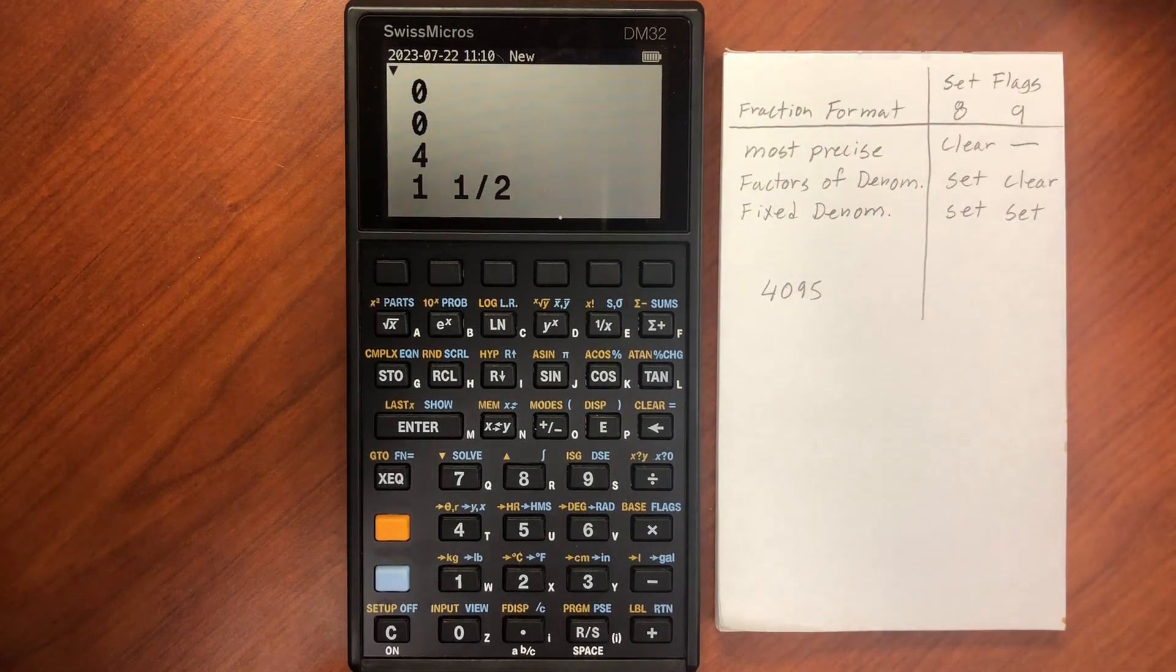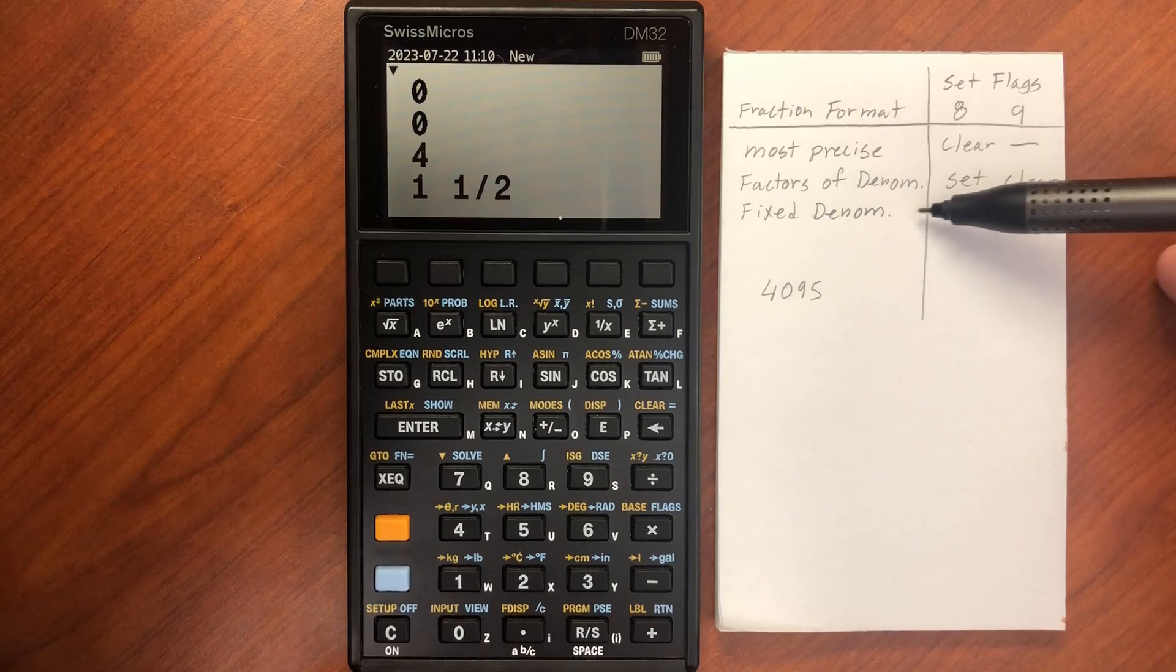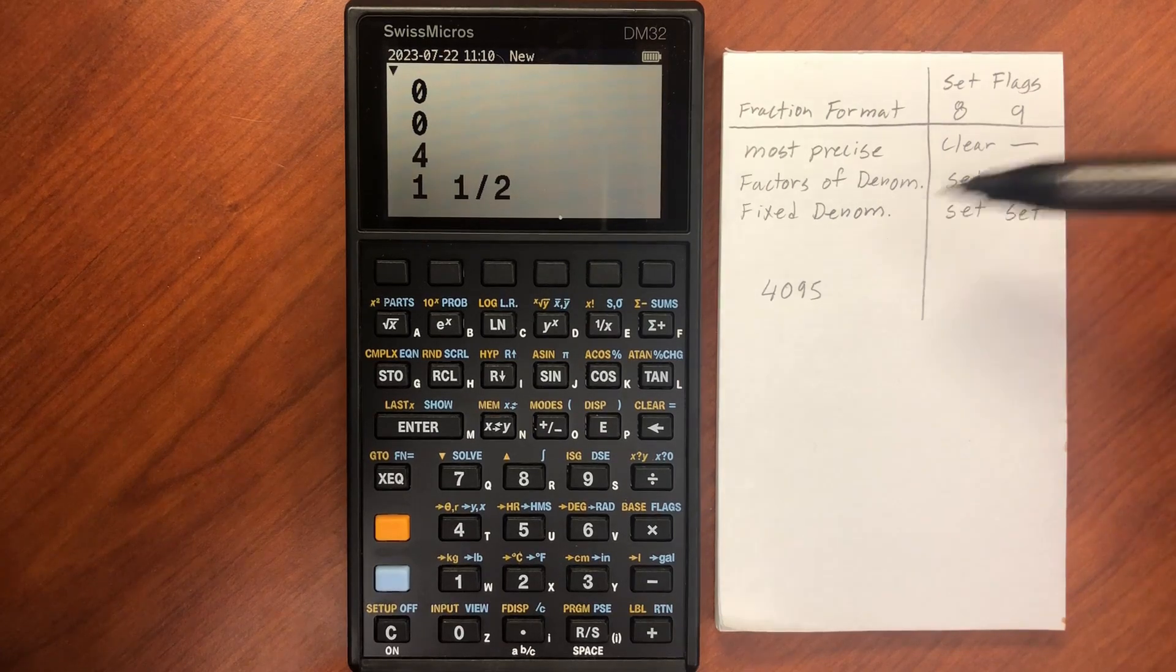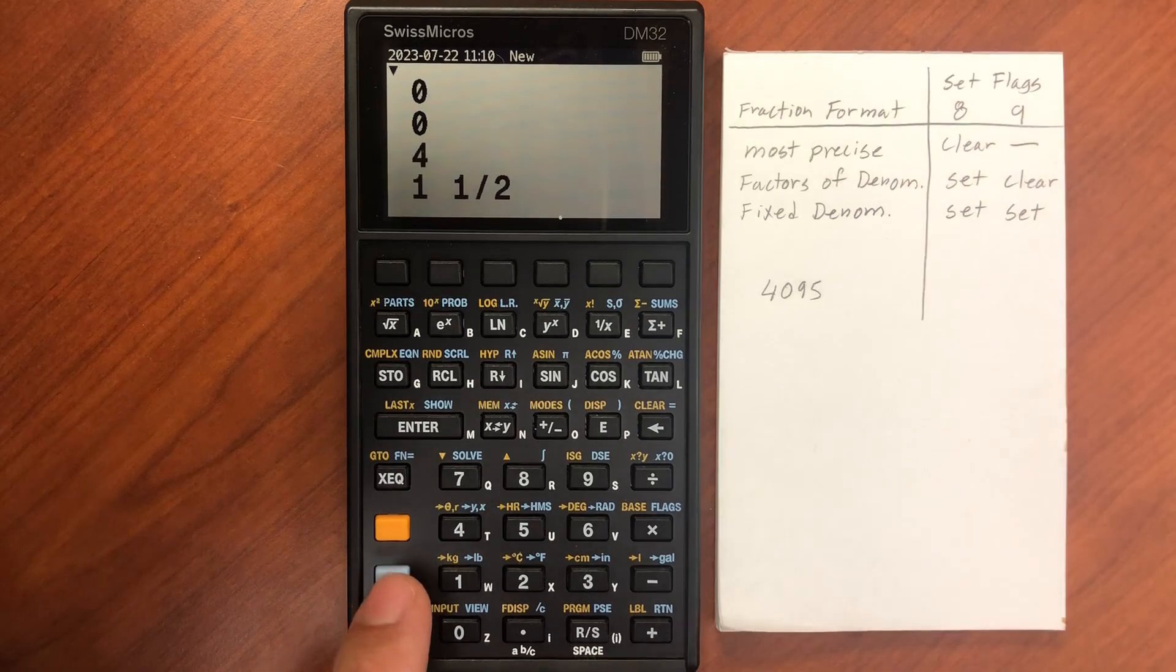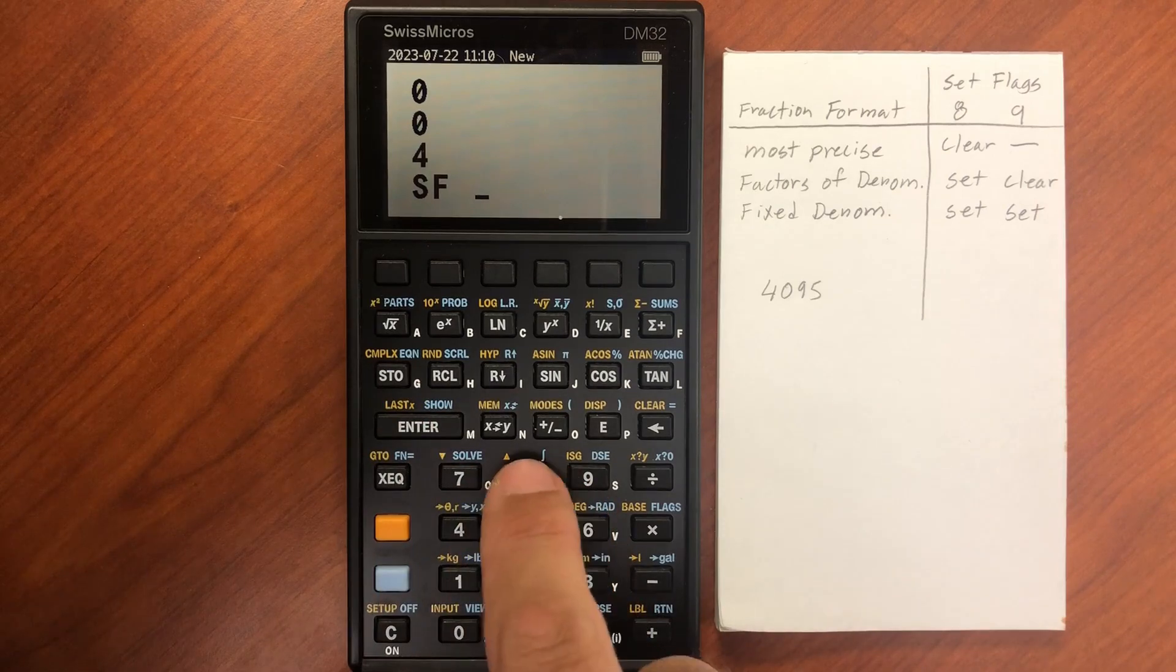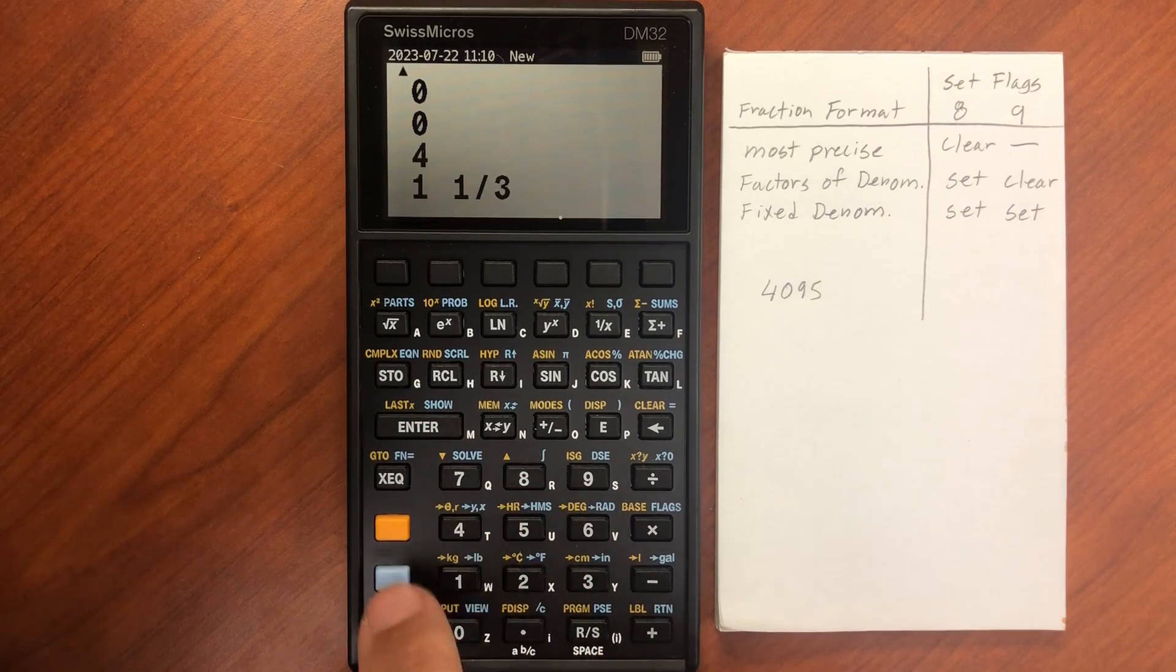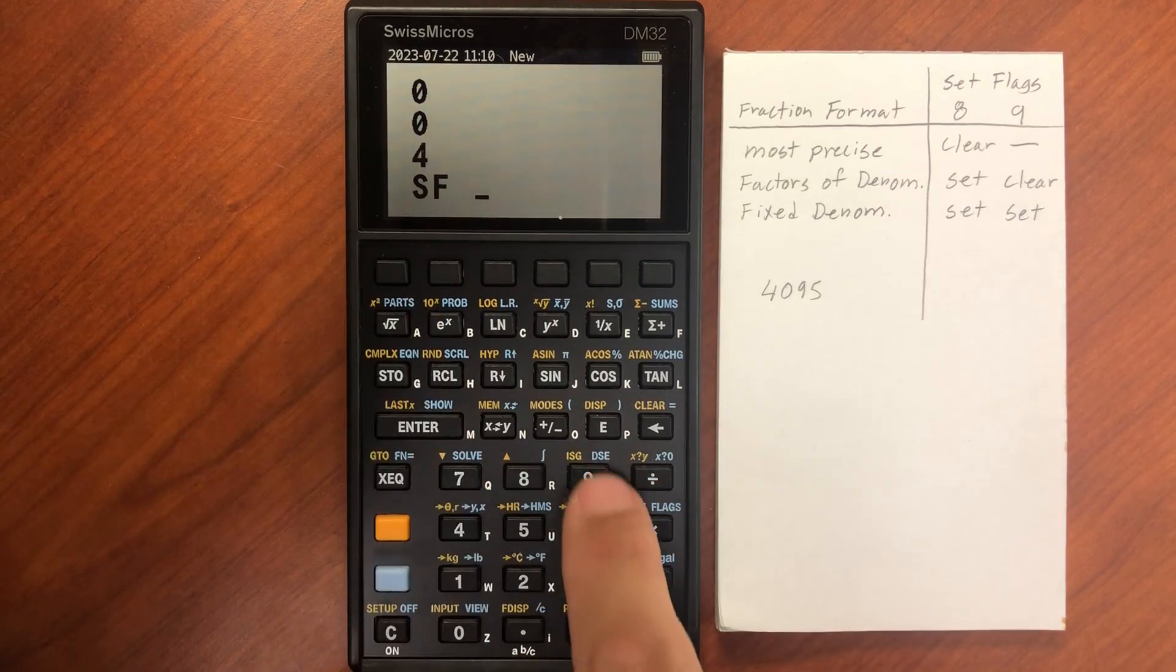Now one of the other cool factors about this is you can set flags to get different fraction formats. So if I want to always have a certain fixed denominator, I can go ahead and set both the 8 and the 9 flags. So that's in the flags menu—shift flags. And which flag do we want to set? We want to set 8.